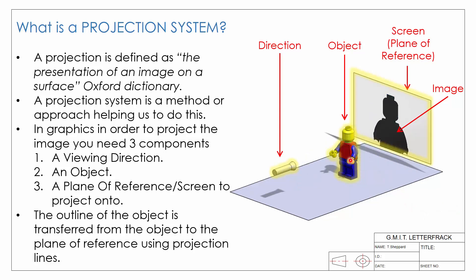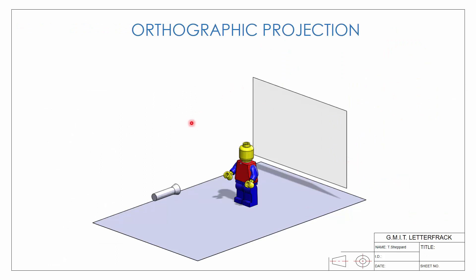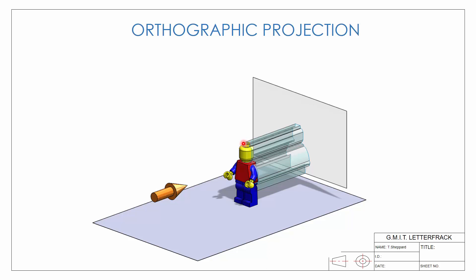Now let's focus on orthographic projection. The three components are exactly the same — we have our direction, our object, and our plane of reference. The only difference is that instead of a torch, we think of it purely as an arrow, just a direction we're looking in. In orthographic projection, the rays of light all move back in the same direction as our viewing direction — they don't spread out. They cast our image onto the plane of reference, and because all rays move straight back in line with our line of sight, the resulting image is the same size as the original object.